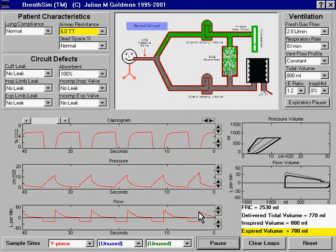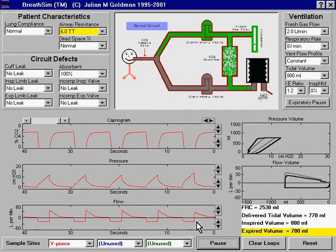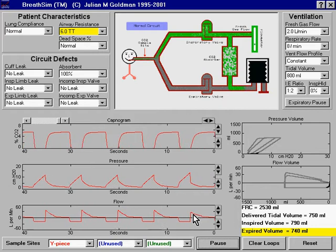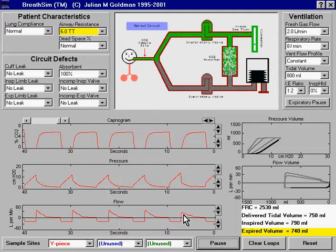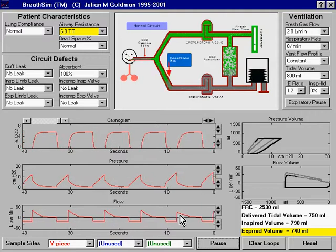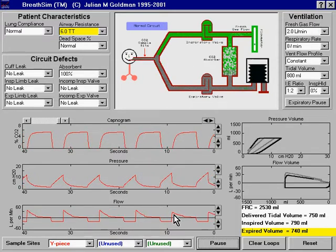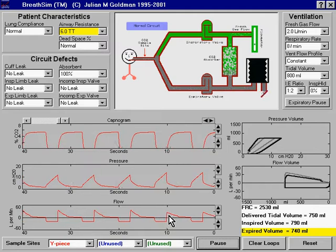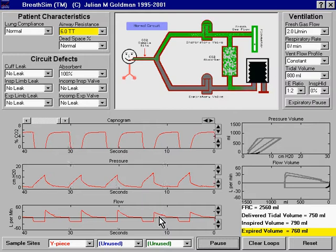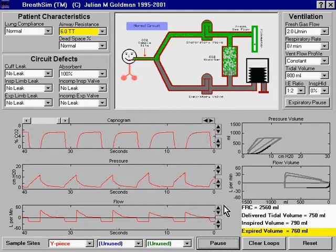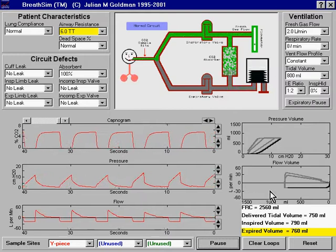The flow waveform reveals something interesting as well. Notice the area above the black line, which is the expiratory portion. There is a decrease in peak expiratory flow because flow is reduced. That is, passive exhalation across the increased airway resistance results in a decrease in expiratory flow.